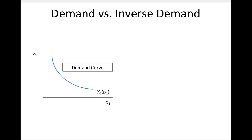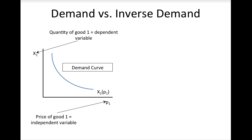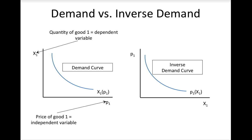In the previous slide, we graphed the demand function with quantity of good 1 on the vertical axis and price of good 1 on the horizontal axis, following the standard mathematical convention of putting the dependent variable on the vertical axis. Note that price is indeed independent, as a consumer cannot choose the price they pay. When graphed this way, the figure is called a demand curve. Frequently in market analyses, we flip the axes so that price is on the vertical axis and quantity is on the horizontal axis — this is called an inverse demand curve.